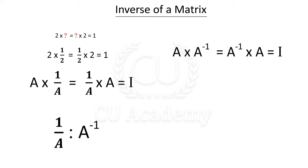Inverse of a matrix: if you multiply the inverse with that matrix, then you get the identity matrix.